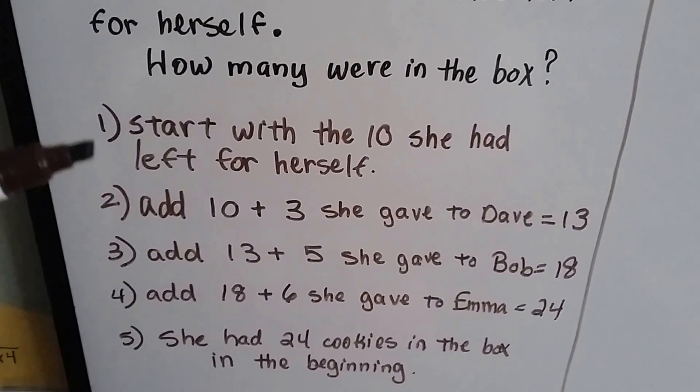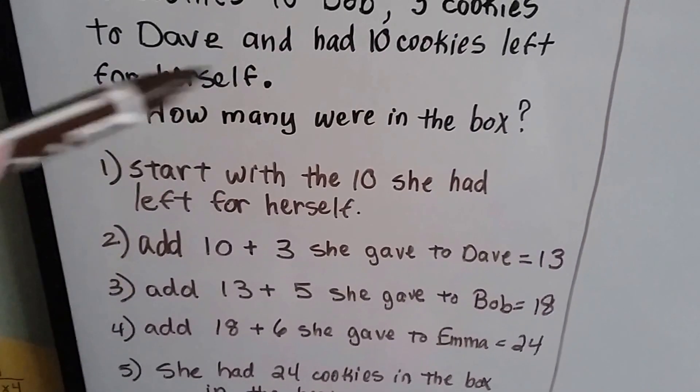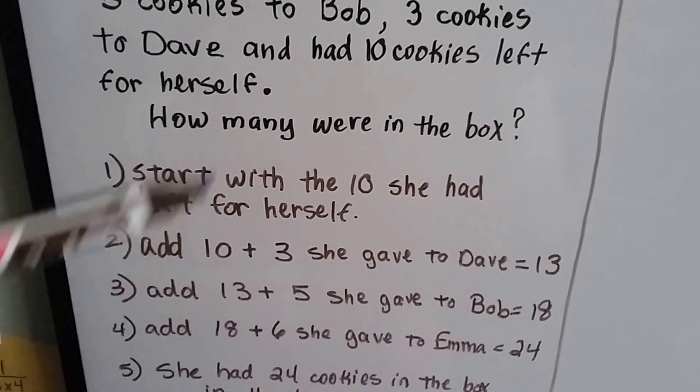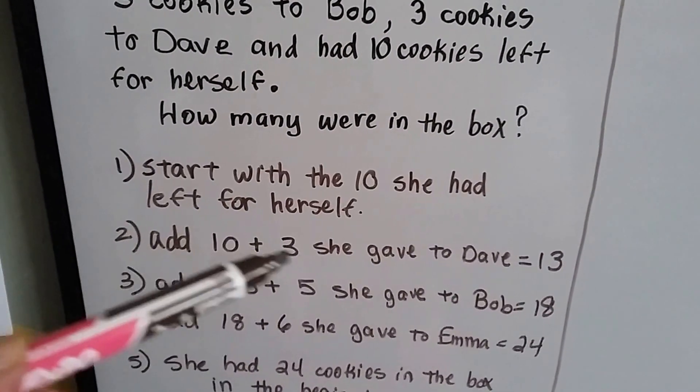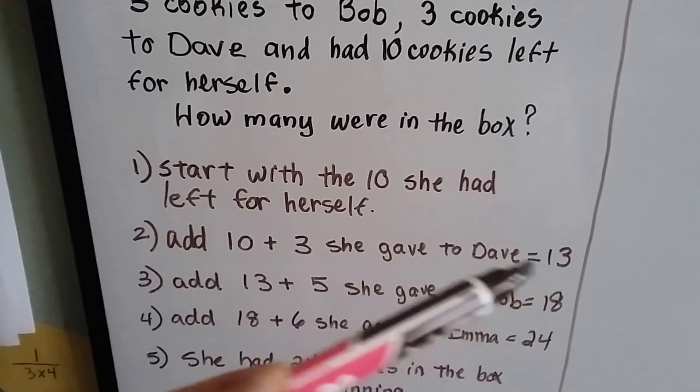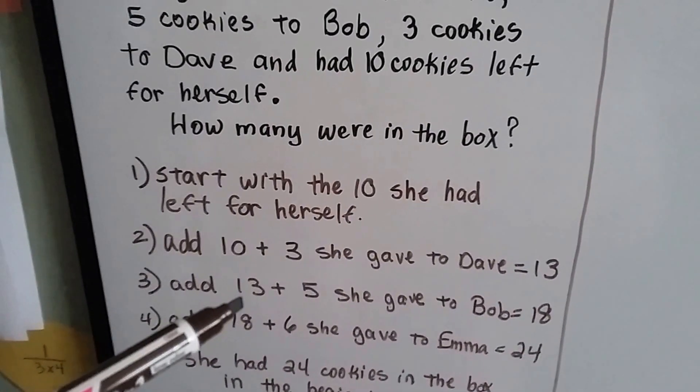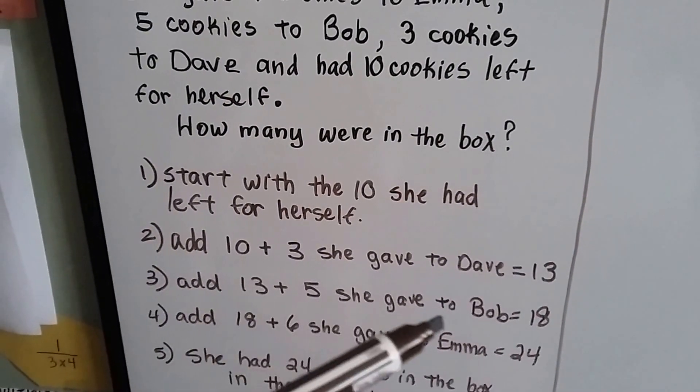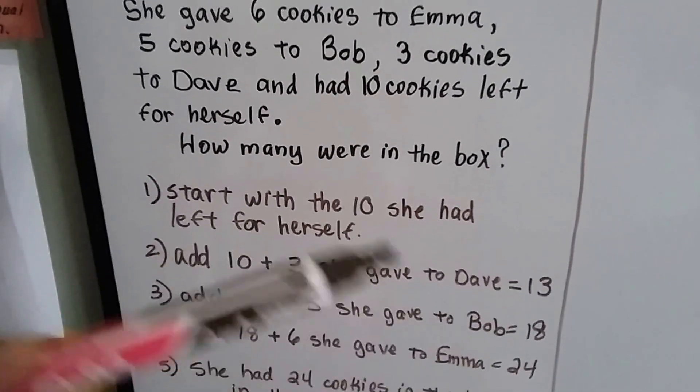So what we're going to do is start with the ten that she had left for herself. Then we're going to add the three that she gave to Dave. So now we have thirteen. Now we're going to add thirteen plus the five she gave to Bob, so now we're at eighteen.